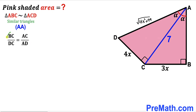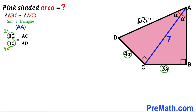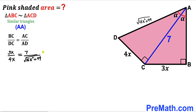In other words, the ratio of the side lengths BC and DC is going to be equal to the ratio of side lengths AC and AD. In our case BC = 3x, DC = 4x, AC = 7, and AD = √(16x² + 49), so I'm going to replace each of those values into the proportion as you can see in this next step.